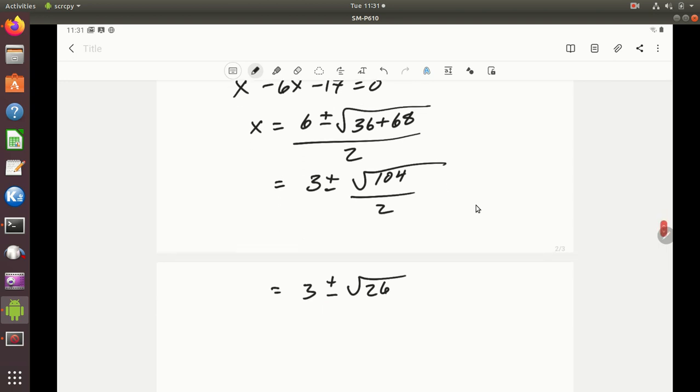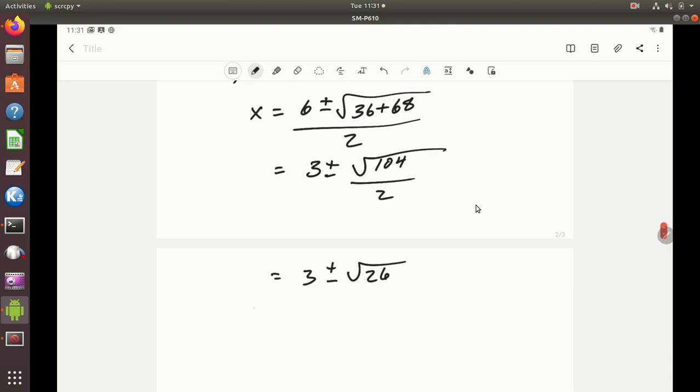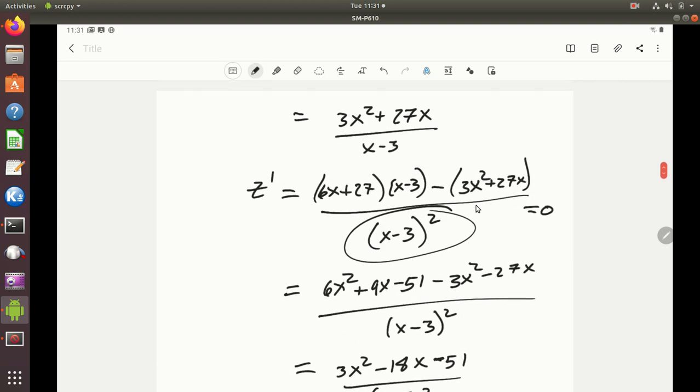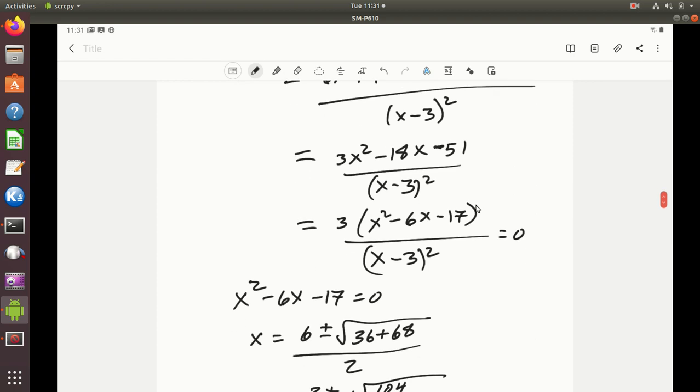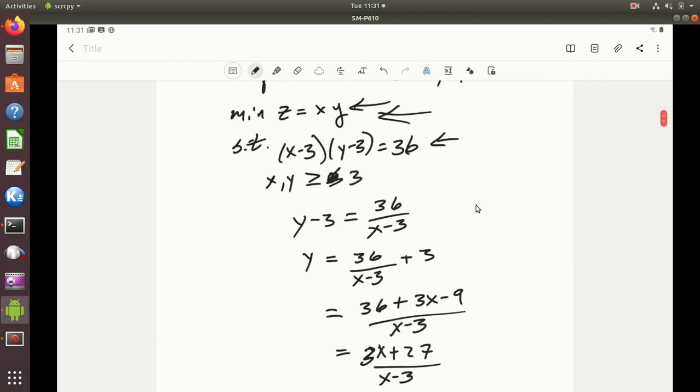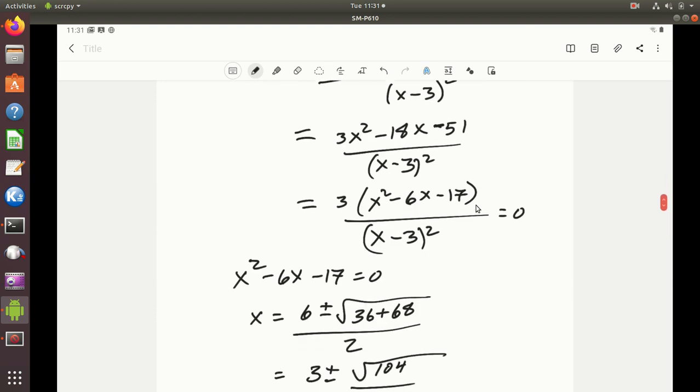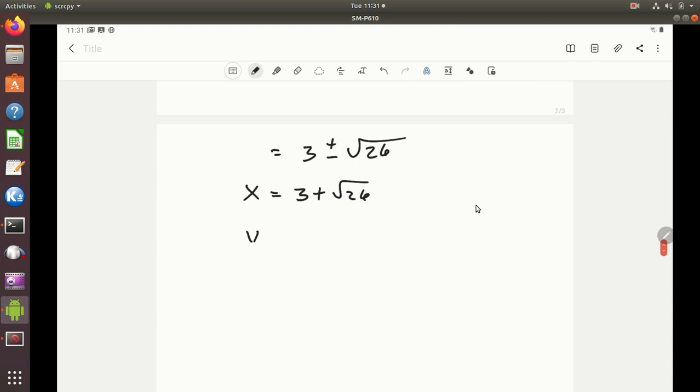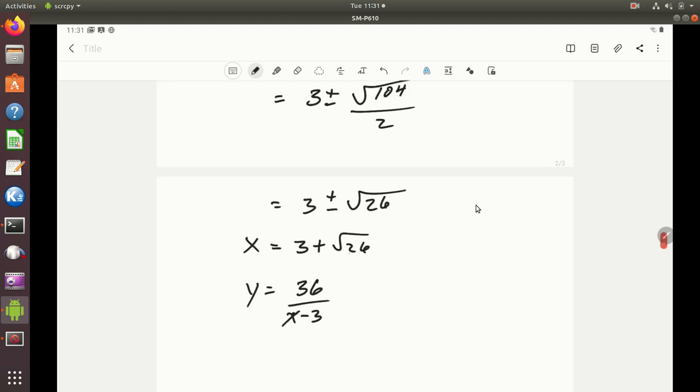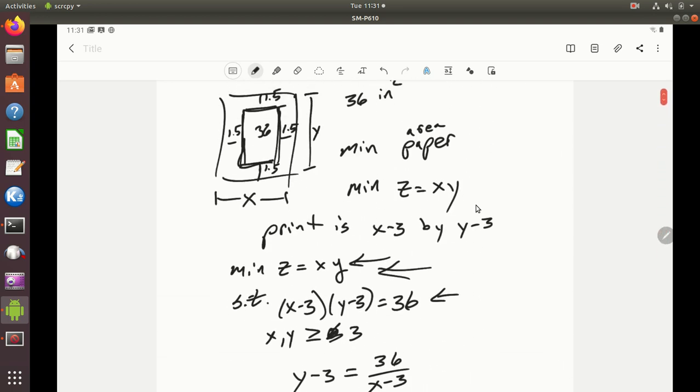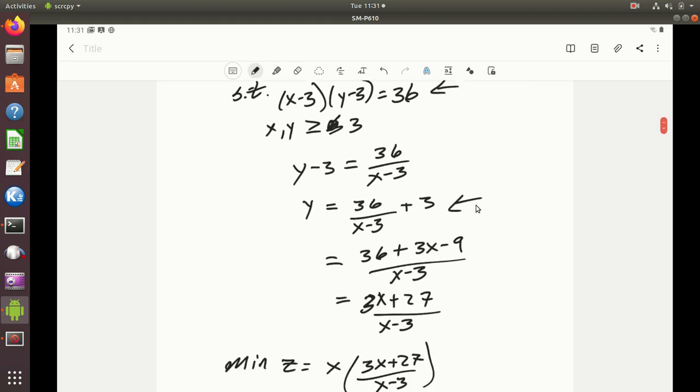Now, so can't be minus, and so it must just be plus. So we get x is 3 plus the square root of 26. So that's x. And of course y, well, we solve that, that was way back here. So y, we would put that in there. Y is 36 over x minus 3. So y is equal to 36 over x minus 3, and then it was plus 3. Plus 3.